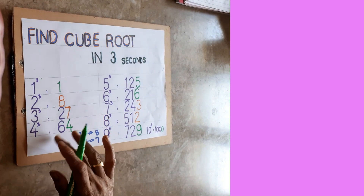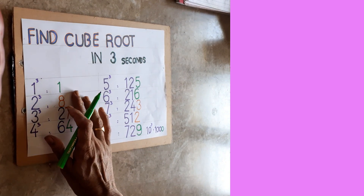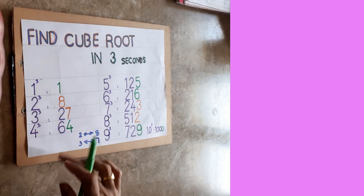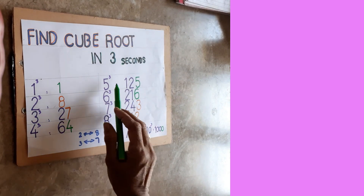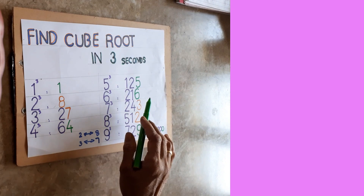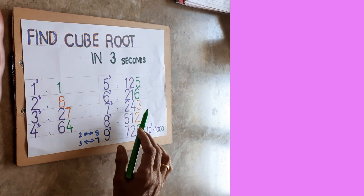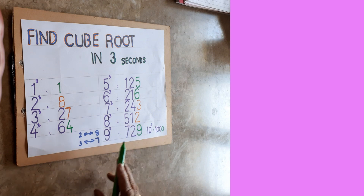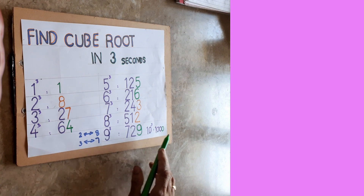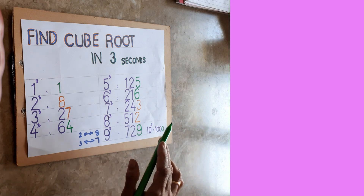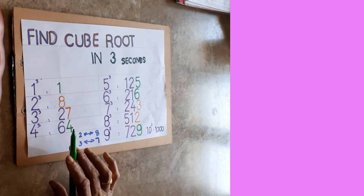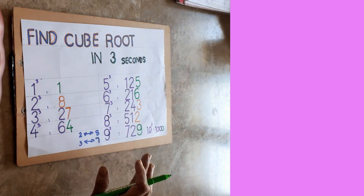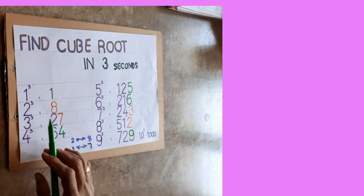1 cube is 1, 2 cube is 8, 3 cube is 27, 4 cube is 64, 5 cube is 125, 6 cube is 216, 7 cube is 343, 8 cube is 512, 9 cube is 729, 10 cube is 1000. This much you should know. In these, one common thing is there — what is that?